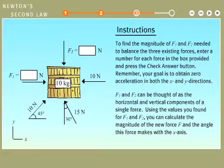To find the magnitude of F1 and F2 needed to balance the three existing forces, enter a number for each force in the box provided and press the check answer button. Remember, your goal is to obtain zero acceleration in both the X and Y directions. F1 and F2 can be thought of as the horizontal and vertical components of a single force. Using the values you found for F1 and F2, you can calculate the magnitude of the new force F and the angle this force makes with the X axis.